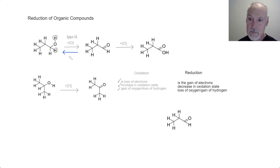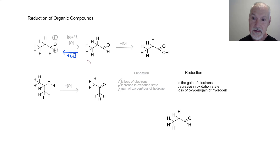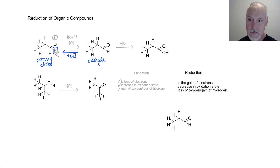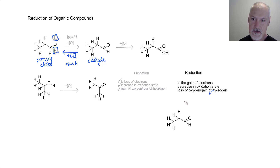We accomplish that by means of a reducing agent, which we use this symbol for. I can see moving from this compound — which is an aldehyde — to a primary alcohol. I can see that that involves the addition of these hydrogens, which is one of my signs of reduction.